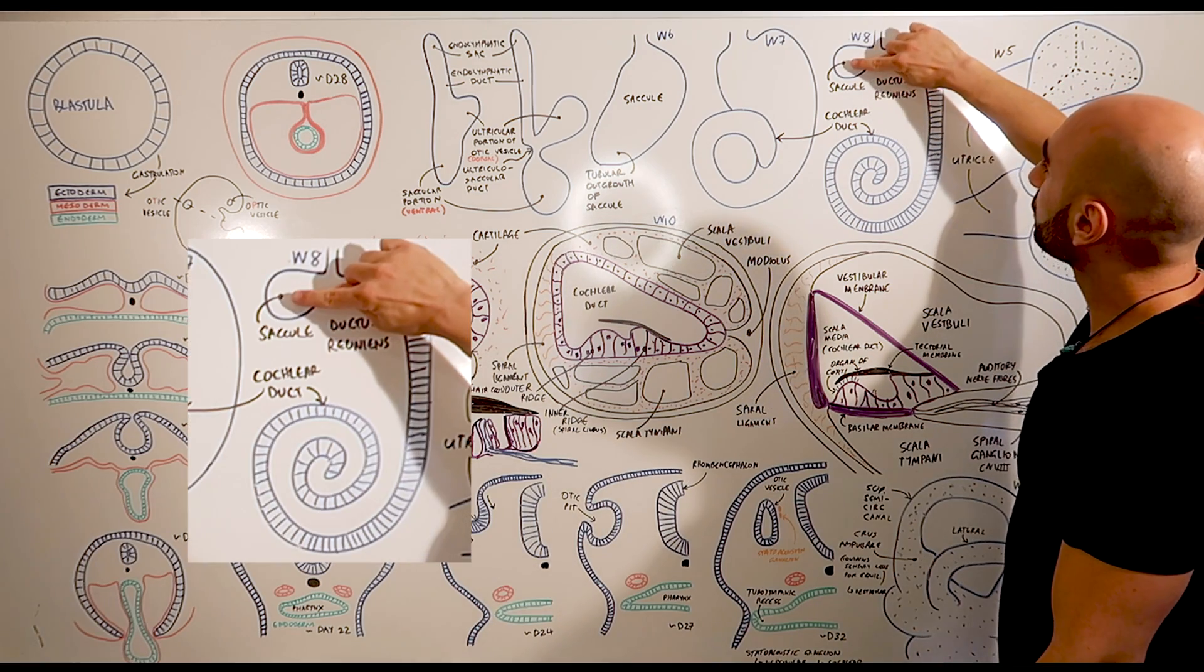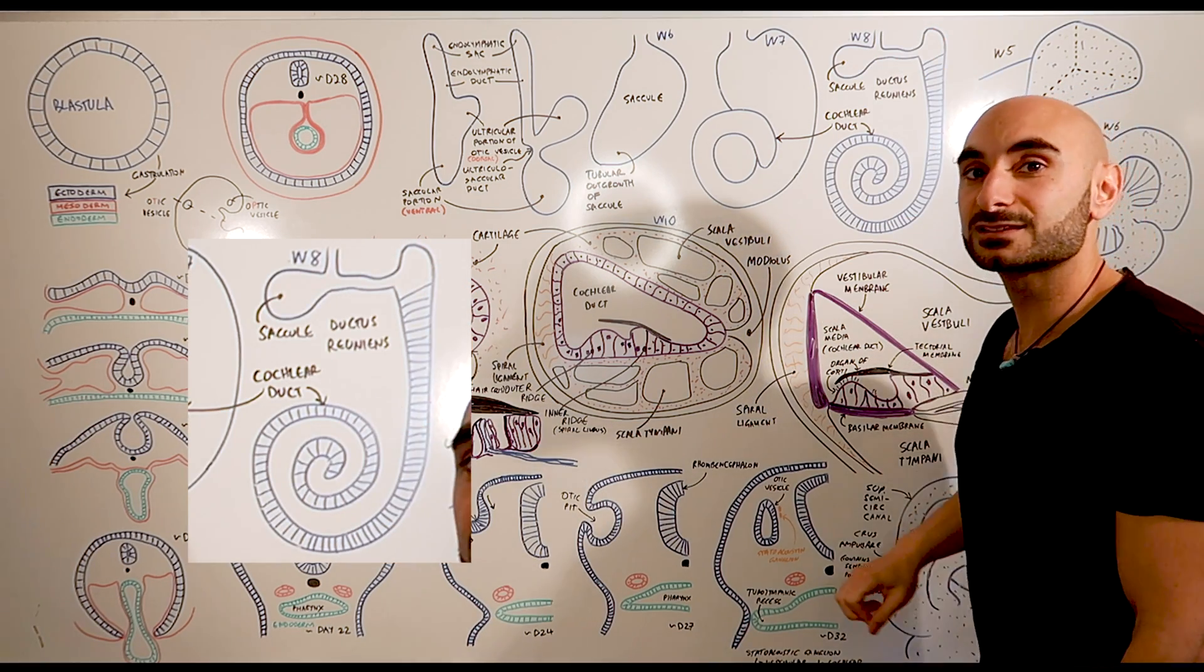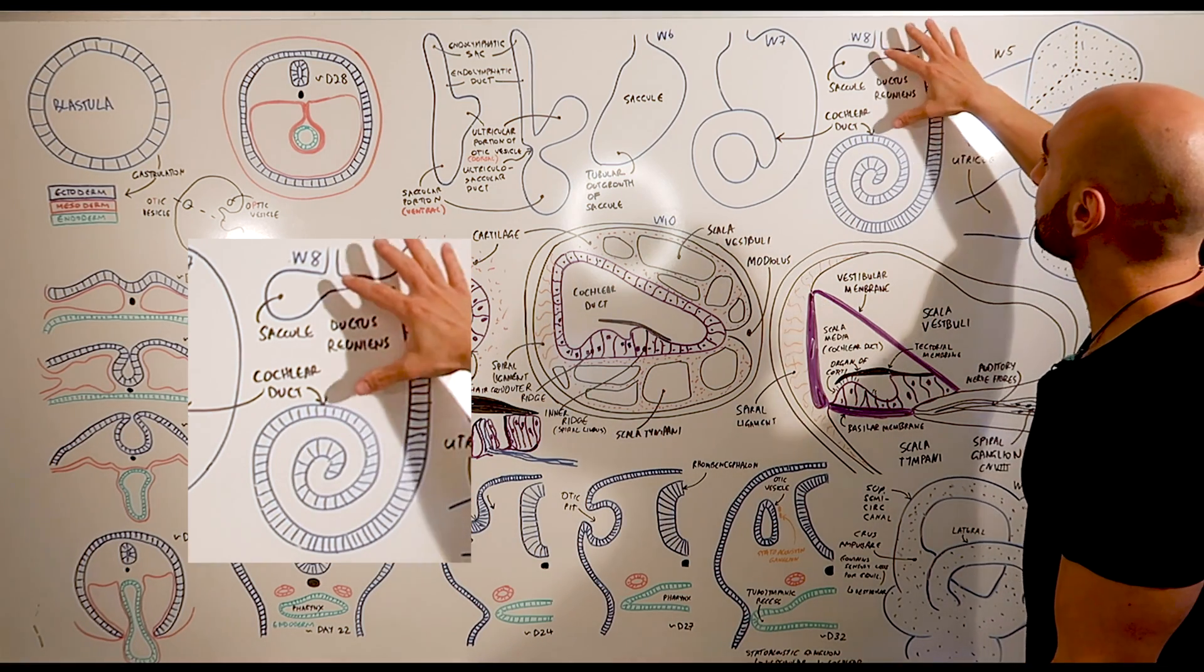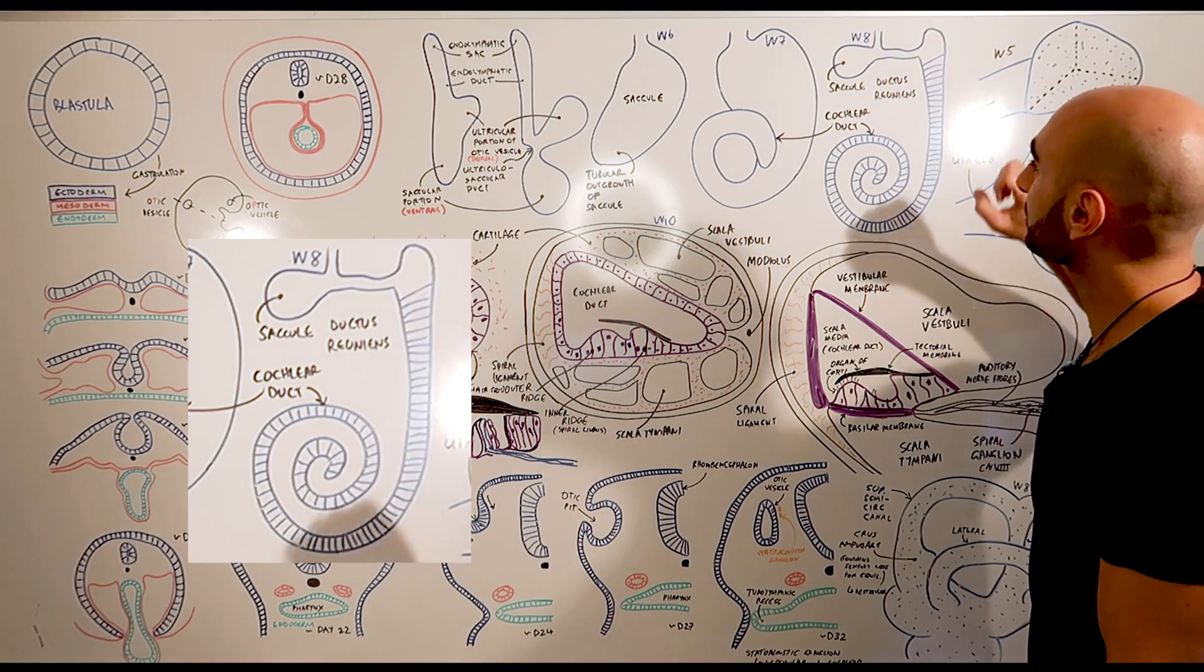And we'll have the saccule over here, which contains sensory cells. This connection between the cochlear duct and the saccule was called the ductus reuniens.